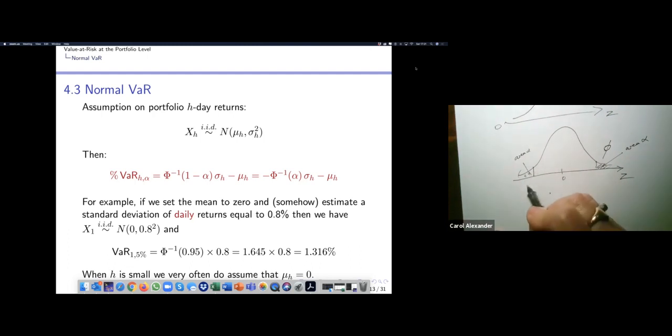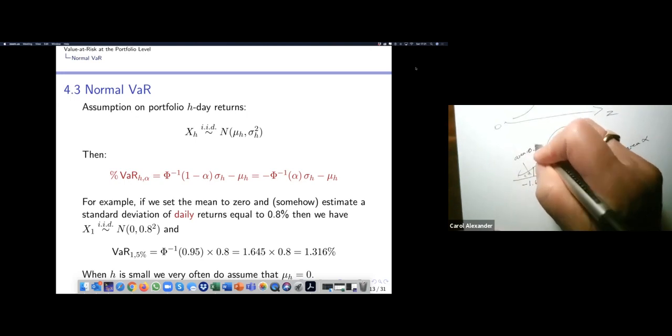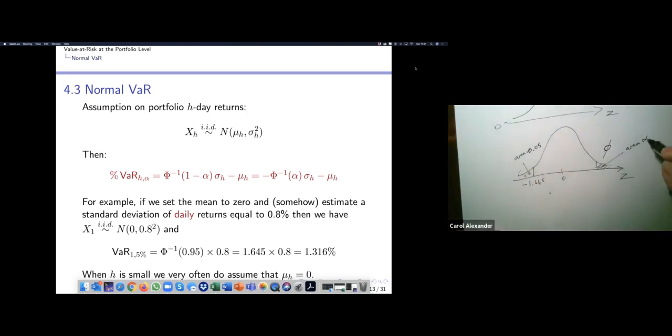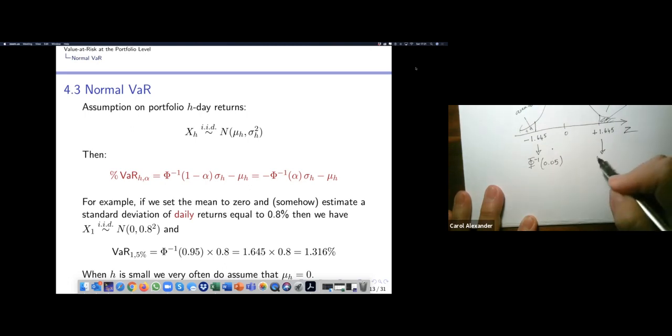That's like minus 1.645 if alpha is equal to 0.05, and this would be plus 1.645. This is the phi to the minus one of 0.05, and this is the phi to the minus one of 0.95.